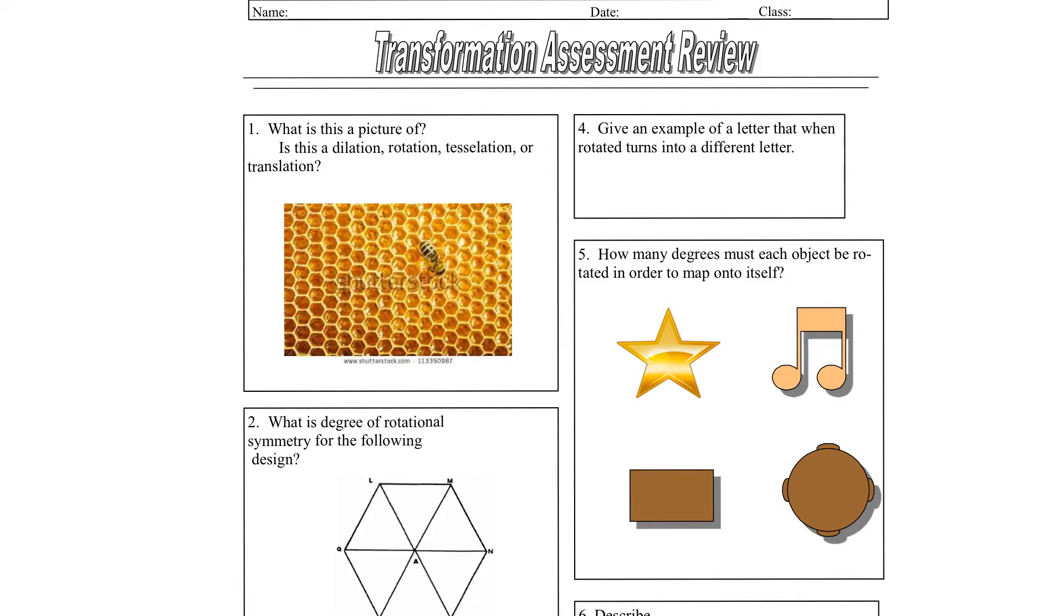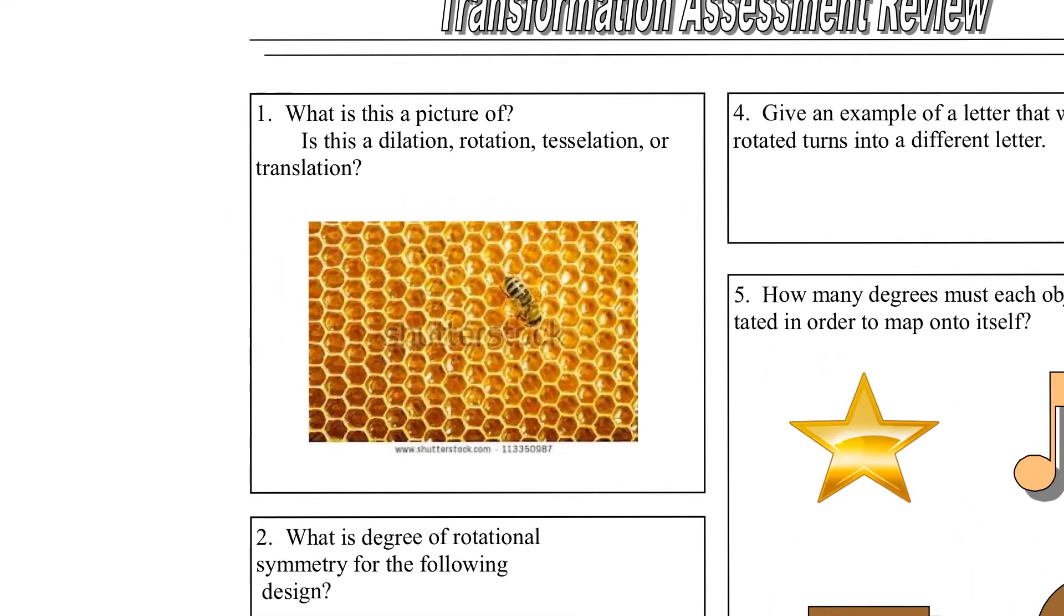So this is a review. I'm going to get you started on it, let you work on it for a while. Let's just jump through here on a few of these. So number one, what is that a picture of? That is a tessellation. It's the repeating of a pattern. Repeating of that hexagon.